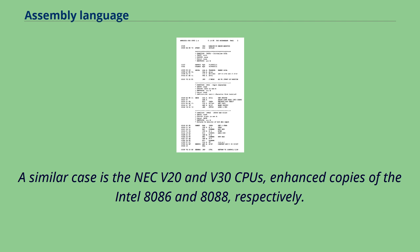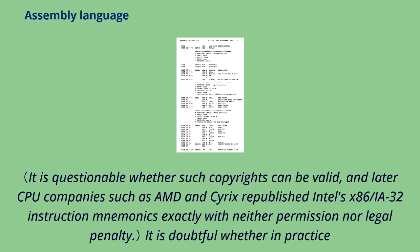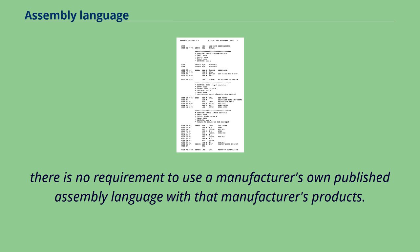A similar case is the NEC V20 and V30 CPUs, enhanced copies of the Intel 8086 and 8088 respectively. Like Zilog with the Z80, NEC invented new mnemonics for all of the 8086 and 8088 instructions to avoid accusations of infringement of Intel's copyright. It is doubtful whether in practice many people who programmed the V20 and V30 actually wrote in NEC's assembly language rather than Intel's, since any two assembly languages for the same instruction set architecture are isomorphic. There is no requirement to use a manufacturer's own published assembly language with that manufacturer's products.